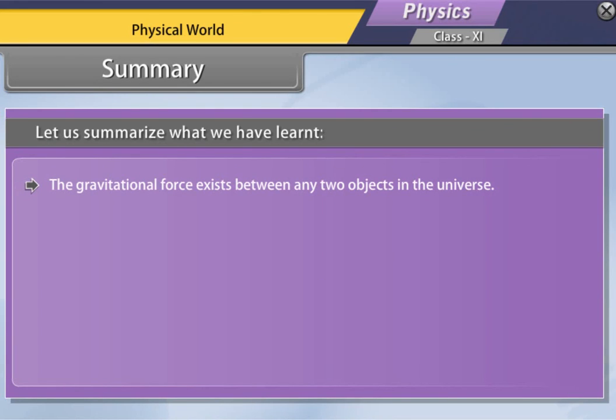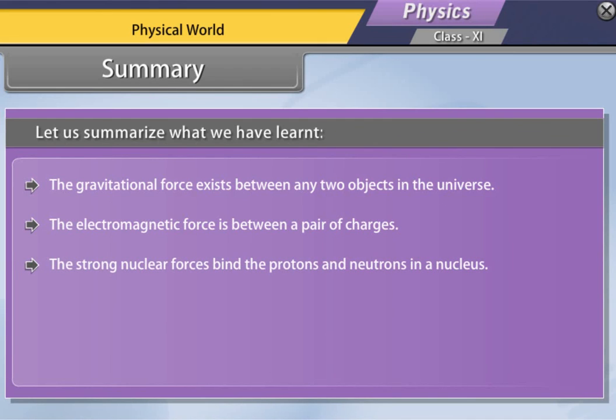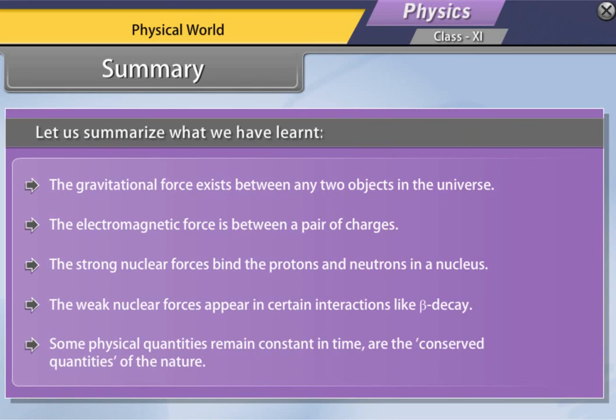The gravitational force exists between any two objects in the universe. The electromagnetic force is between a pair of charges. The strong nuclear forces bind the protons and neutrons in a nucleus. The weak nuclear forces appear in certain interactions like beta decay. Some physical quantities remain constant in time are the conserved quantities of the nature.